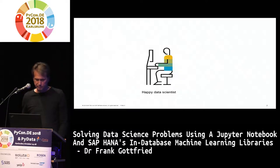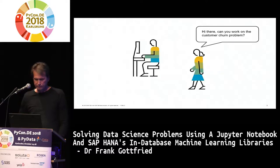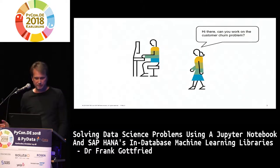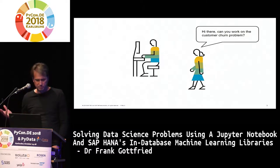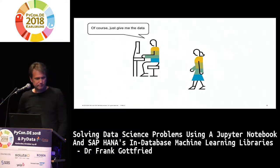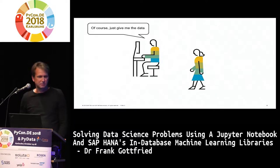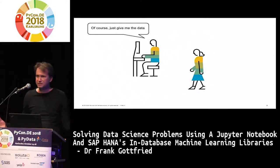Think about a data scientist who's doing his work, and then all of a sudden his business colleague comes in and says, could you work on a particular problem for me? In that case, it's a customer churn problem. And the data scientist says, of course I will. Please give me the data. That's the usual reflex we have — give us the data and then we can do anything.